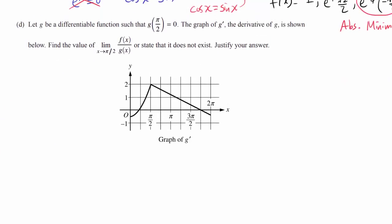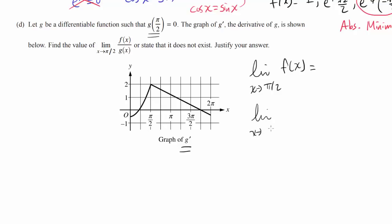Let's go on to the final part, part D. Let g be a differentiable function such that g of pi over 2 is 0. The graph of g prime, the derivative of g, is shown below. They are giving us g prime and g at some values. Find the value of the limit as x approaches pi over 2 of f of x over g of x, or state that it does not exist. Justify your answer.